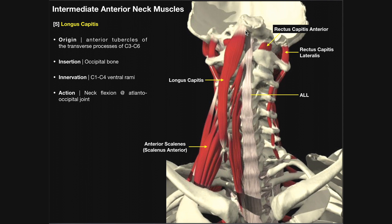The fibers of longus capitis ascend vertically to the insertion on the occipital bone. The innervation is through the C1 through C4 ventral rami, reflecting the muscle's superior extent up to the skull. The action is neck flexion — when both right and left longus capitis muscles contract, they pull the occiput downward, bringing the chin toward the manubrium of the sternum, primarily at the atlanto-occipital joint.